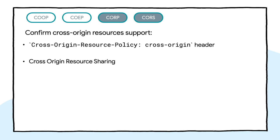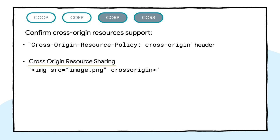To create a cross-origin isolated page, you need to make sure all cross-origin resources embedded in the document explicitly allow it to be loaded. There are two ways to achieve this: by setting Cross-Origin-Resource-Policy to cross-origin, or by applying cross-origin resource sharing. If you serve resources from a different subdomain that you have control of, you can simply apply the CORP header. But for resources you don't control, if they already support CORS, you just append the cross-origin attribute where needed. For resources that don't support it, you should ask the resource provider to enable the Cross-Origin-Resource-Policy header.